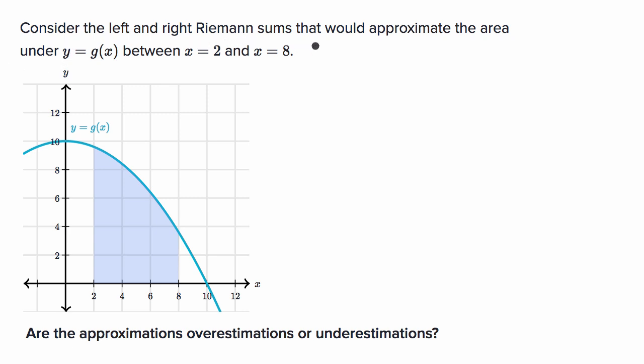Consider the left and right Riemann sums that would approximate the area under y equals g of x between x equals 2 and x equals 8. So we want to approximate this light blue area right over here. Are the approximations overestimations or underestimations? Let's think about each of them. Let's consider the left and the right Riemann sums.